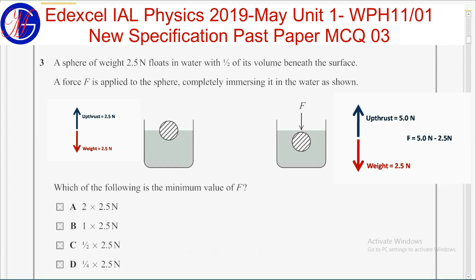So, the extra force capital F, which is applied in the downward direction, should be equal to 2.5 N, assuming the object is stationary. So the correct answer must be B — 2.5 N.